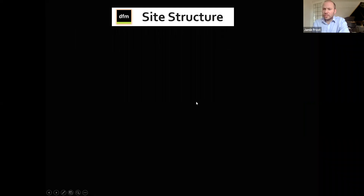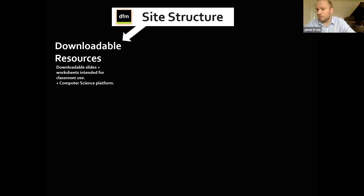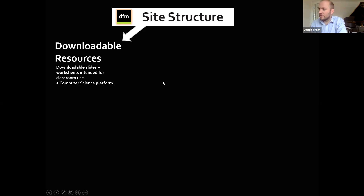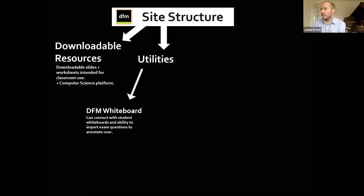Here's an overview of the site structure, which has changed within the last few months with the launch of the Key Skills platform. You've got downloadable resources — slides and worksheets for classroom use. There's also a computer science platform for GCSE OCR syllabus, where students can log in and do mini coding tasks that check their code and save it to their DFM account. You've also got a bunch of utilities, and the big thing is the DFM whiteboard, which I've been integrating into other parts of the platform so students can provide working when answering questions.